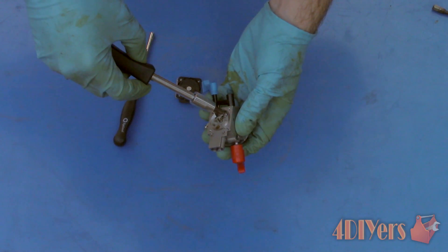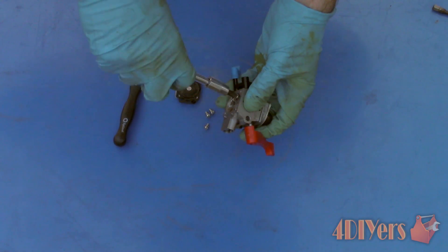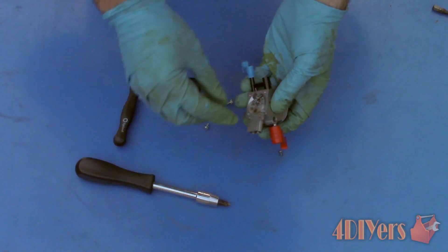Next remove the pivot holding the needle into place. This will be held in by one small Phillips screw. Be sure not to lose the spring in this process as well.